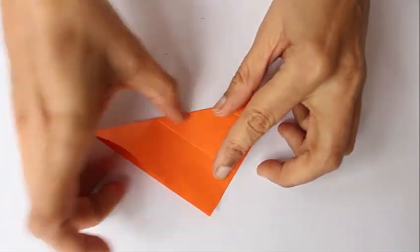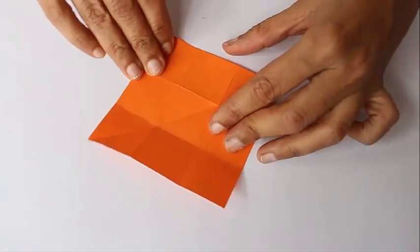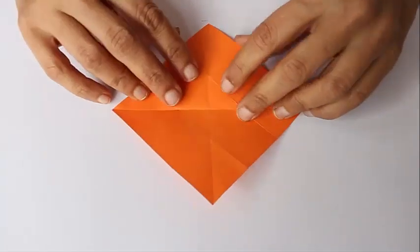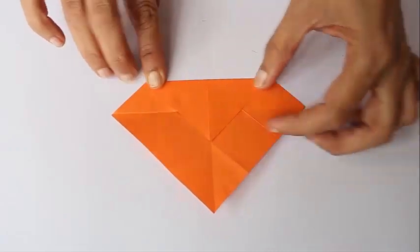Now fold it along the diagonal on both sides, and they will intersect at the center of the square. You can see a small square in the middle.